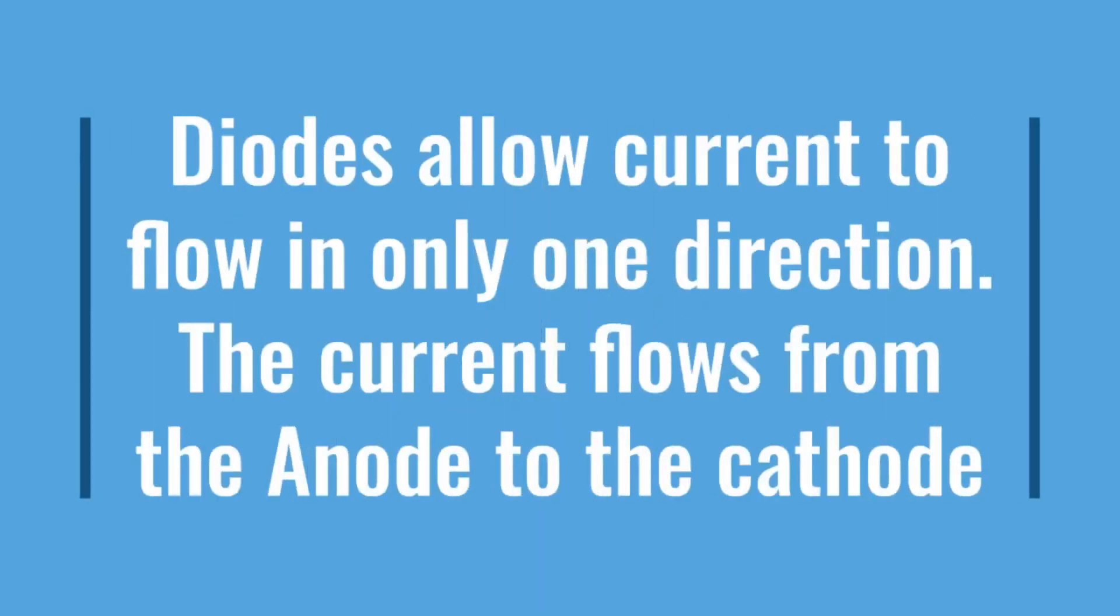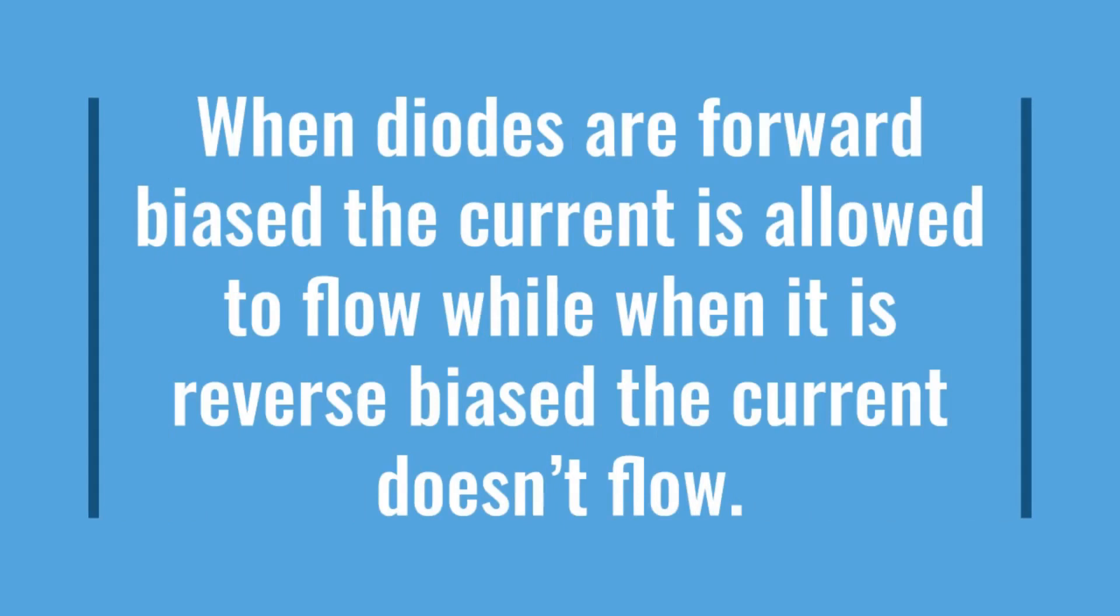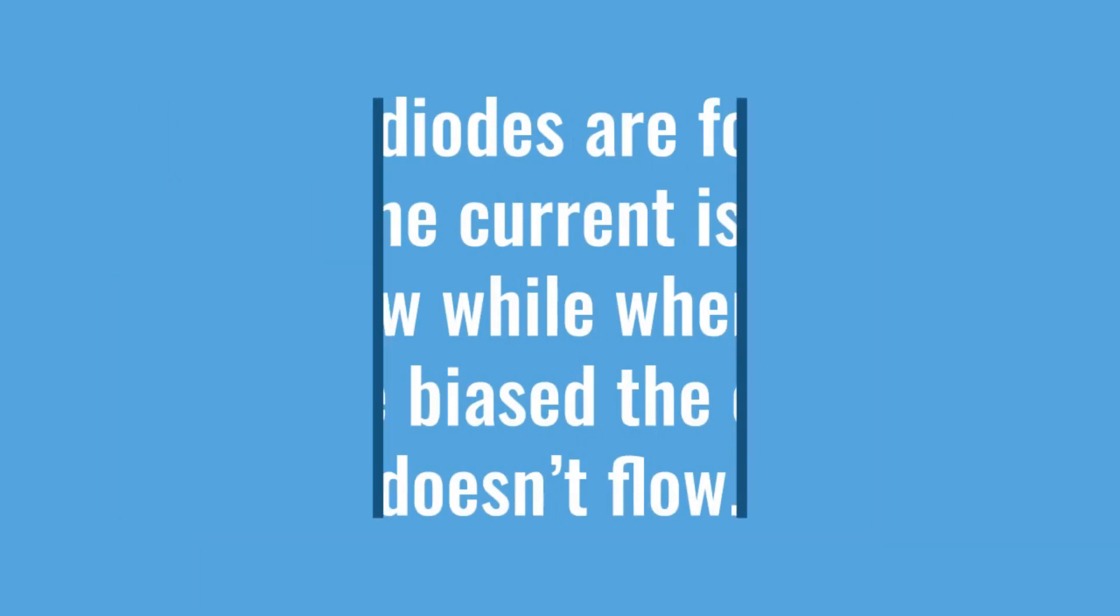We all know that diodes allow current to flow only in one direction. When diodes are forward biased the current is allowed to flow, while when it is reverse biased the current doesn't flow.